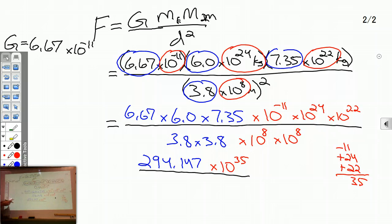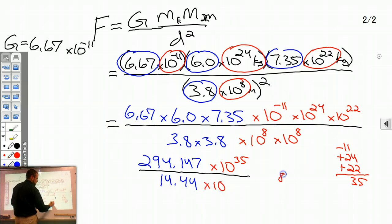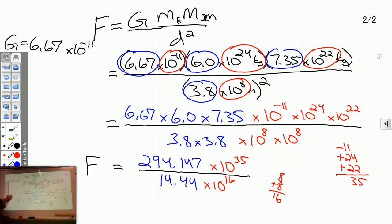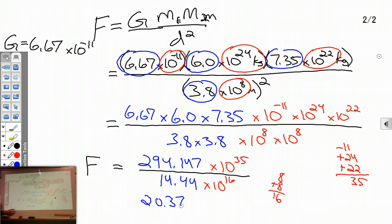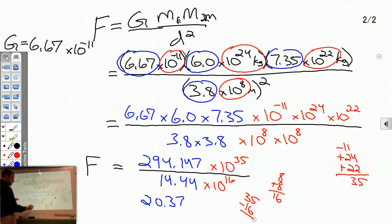For the distance: 3.8 times 3.8 gives us 14.44, and 10 to the 8th times 10 to the 8th — 8 plus 8 is 16 — so we have 10 to the 16th. Now we divide: the blue numbers give us 20.37, and since we're dividing with the same base we subtract exponents — 35 minus 16 gives us 10 to the 19th.